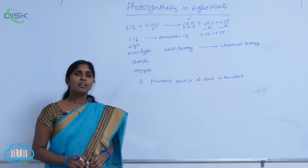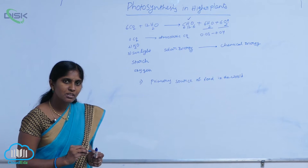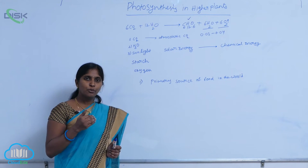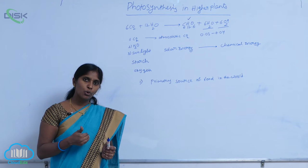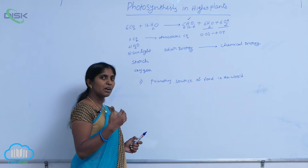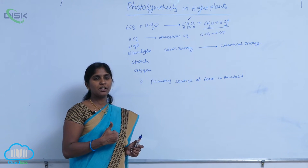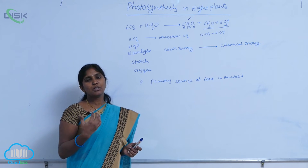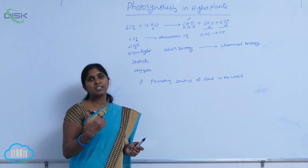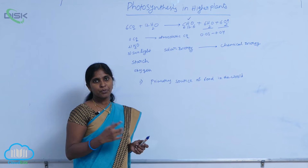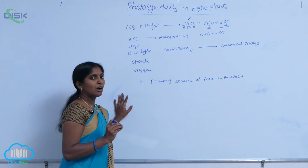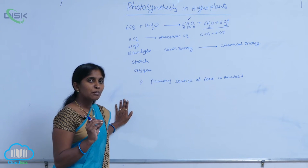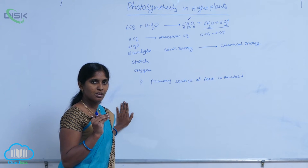Plants are autotrophs. Autotrophs means they synthesize food material on their own, and they utilize part of the prepared food material and the remaining material is stored inside their bodies. It means